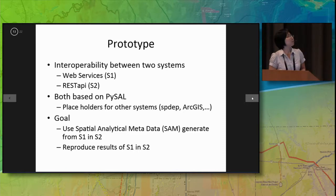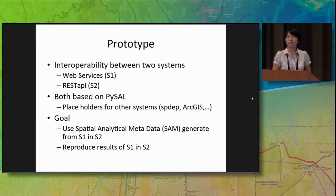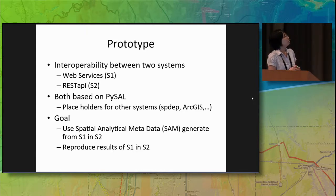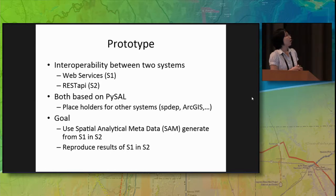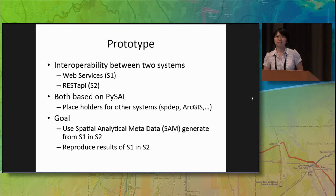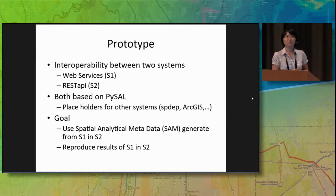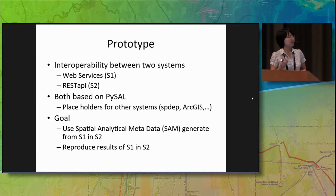Now I will give a demonstration of two prototype systems that we have been developing at ASU. The goal is to ensure interoperability between the two systems. One is implemented as a web processing service compliant with the OGC standard, and the other is a REST API. Both are built on PyCell, which provides the web interface to enable remote invocation of backend functions.